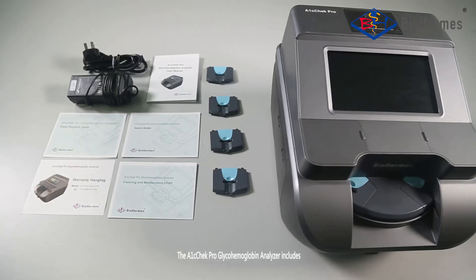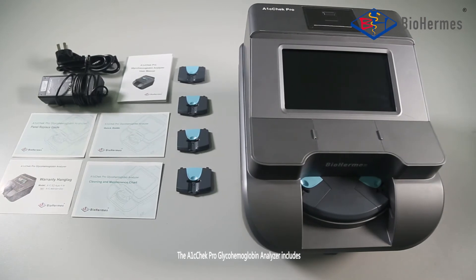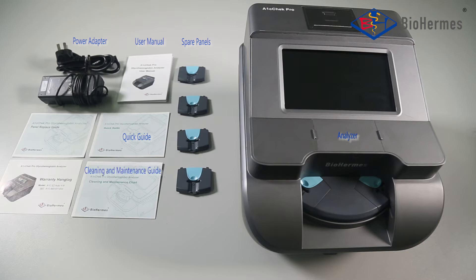The A1C Check Pro Glyco-Hemoglobin Analyzer includes: Analyzer, Power Adapter, Spare Panels, User Manual, Quick Guide, Cleaning and Maintenance Guide, Warranty Hand Tag, and Panel Replace Guide.